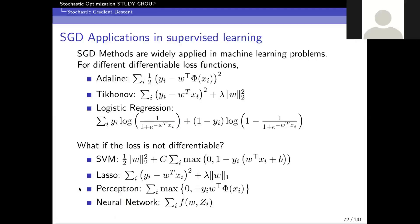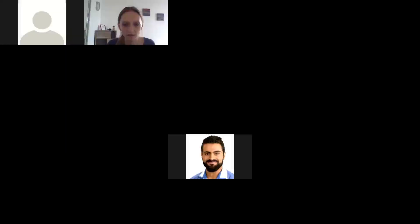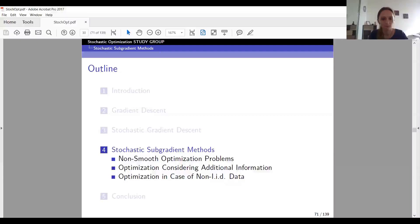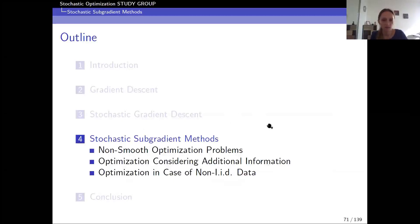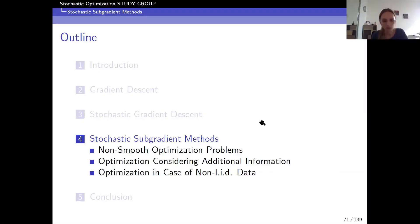So up to now we have talked about stochastic gradient descent and its advantages. For SGD to work best, we assume a smooth optimization problem and IID input data. The current update formula does not consider additional information about the cost function or the underlying geometry of the problem. This is why we will also talk about stochastic subgradient methods — to give an idea of what can be done when those assumptions do not hold.